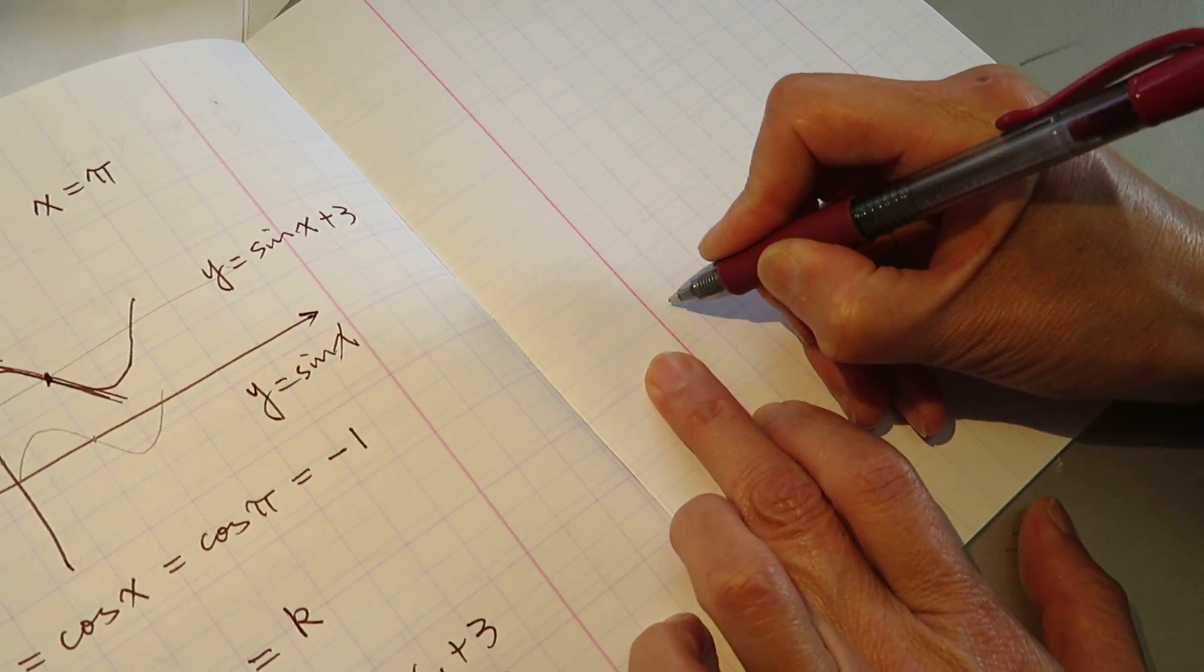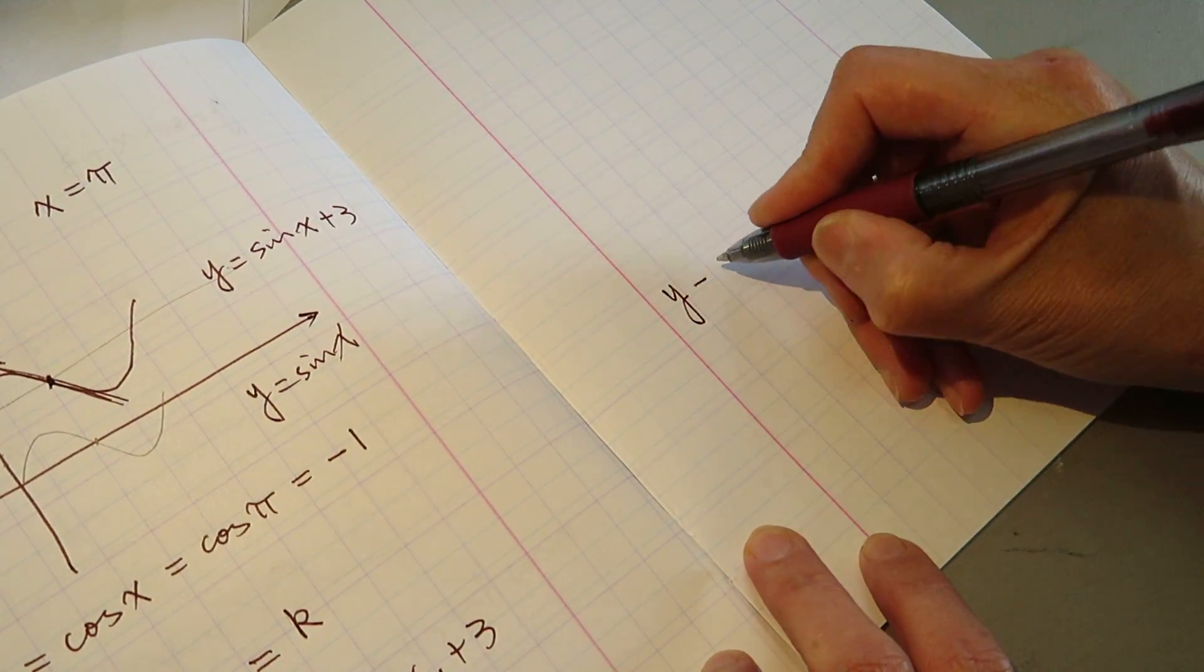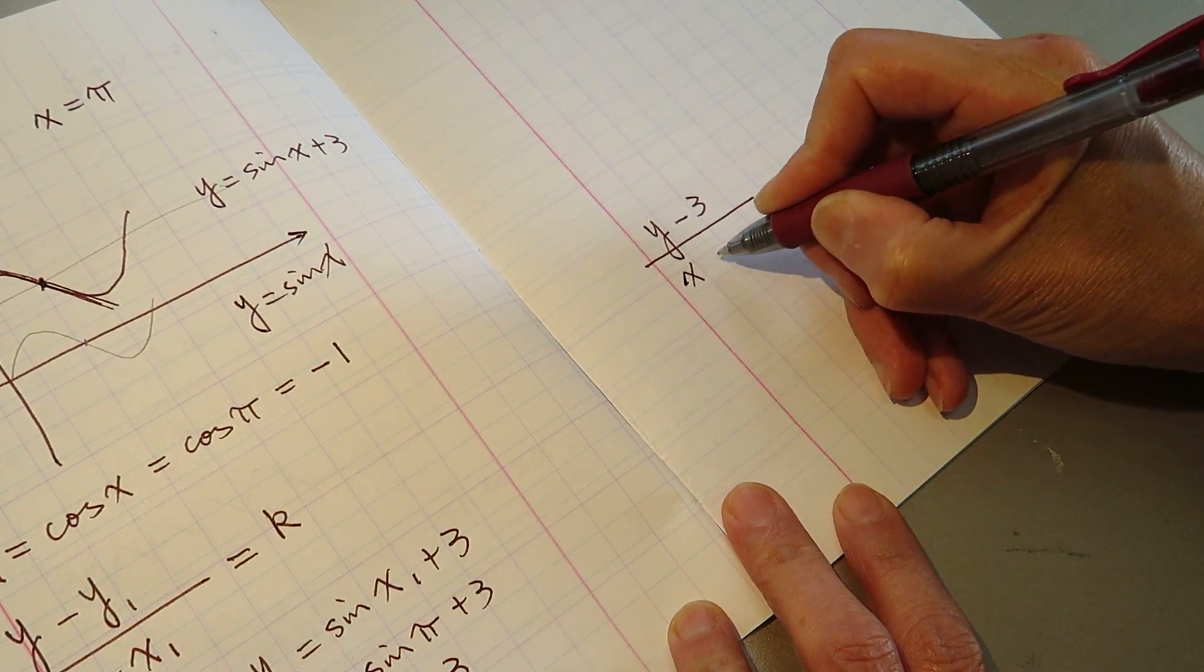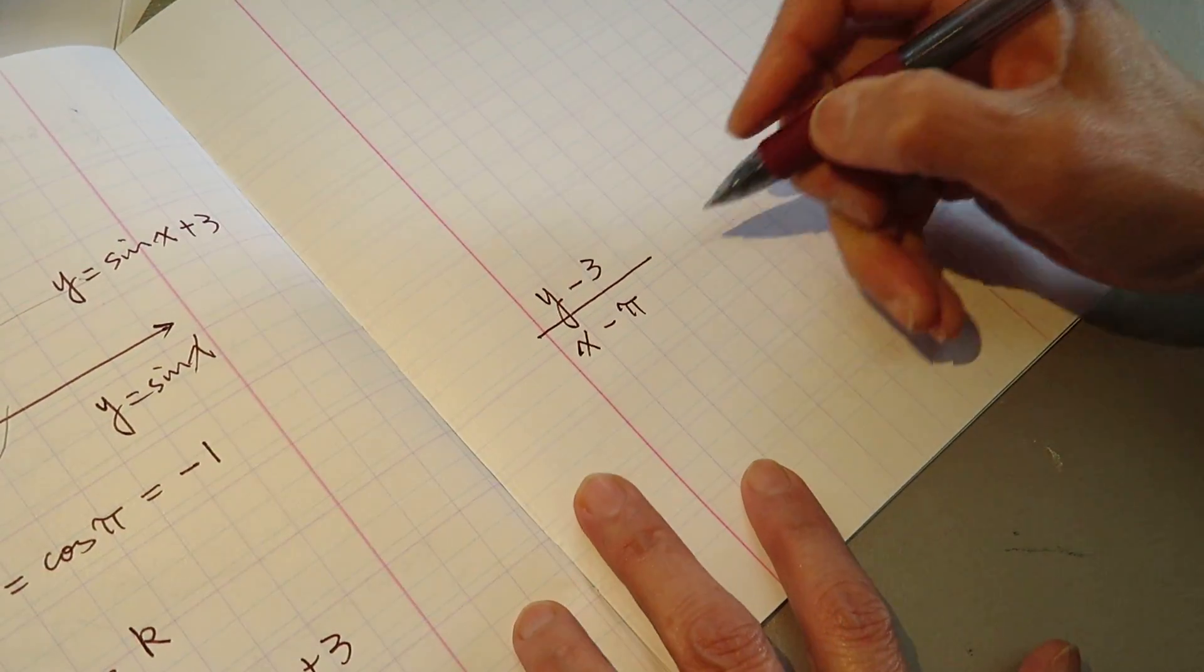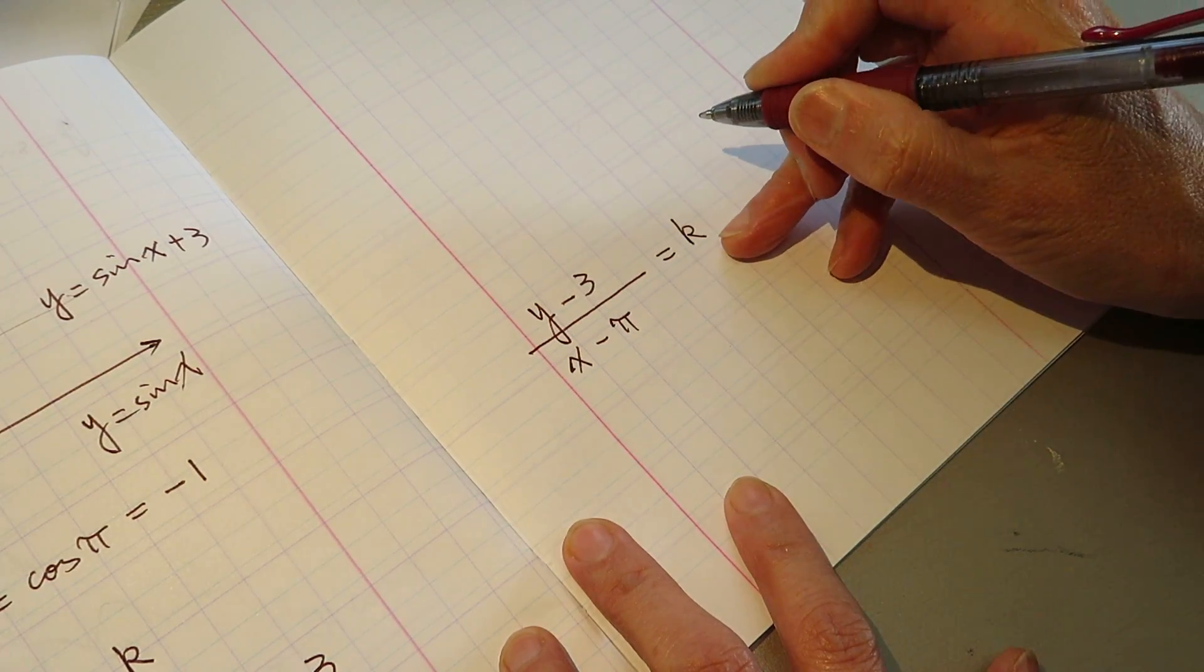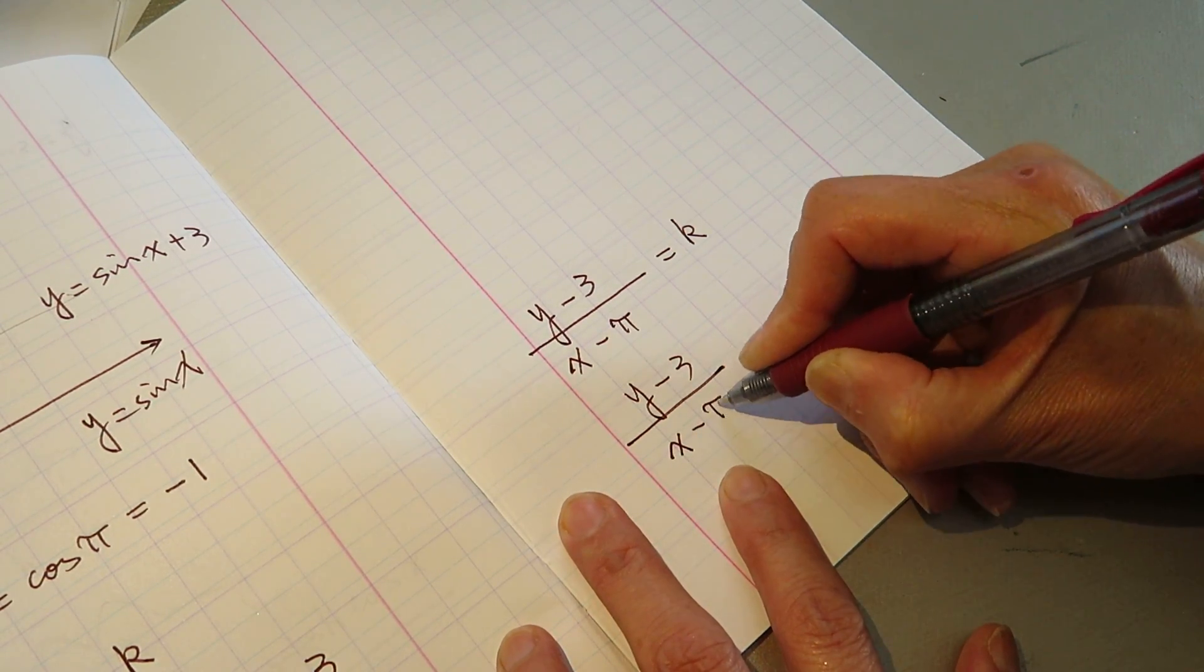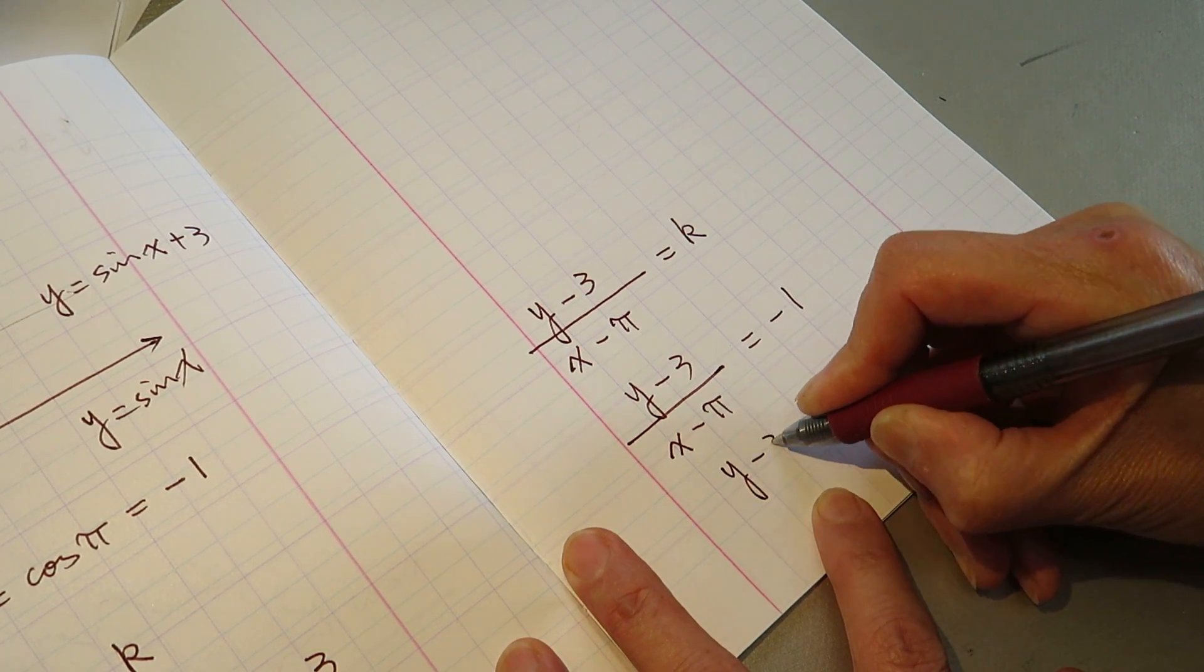y minus y1, which is 3, divided by x minus x1, which is pi, equal to k. The k is negative 1, y minus 3, divided by x minus pi, equal to negative 1, y minus 3, equal to pi minus x.